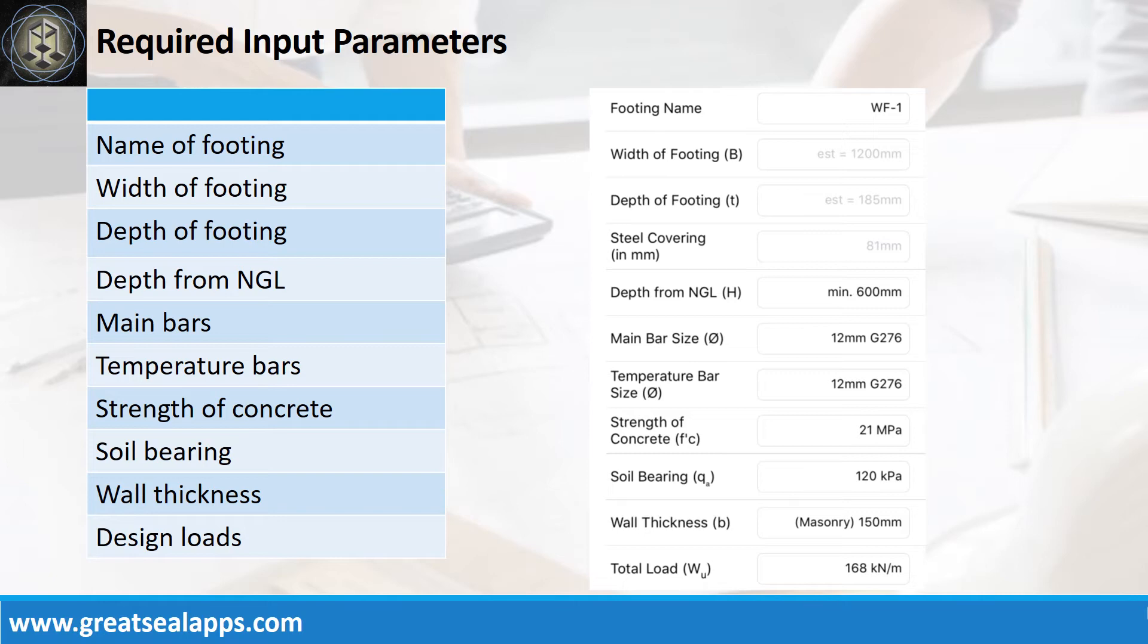12mm bar at grade 276. Strength of concrete, 21MPa. Soil bearing capacity, 120kPa. Wall thickness, 150mm masonry wall and factored uniform load, 168kN per meter.